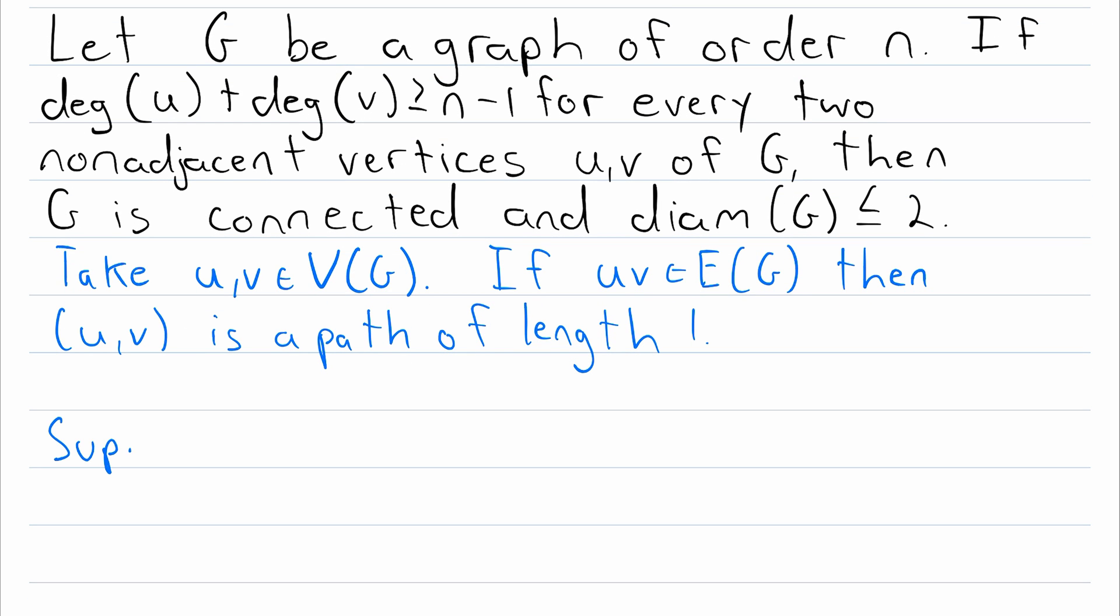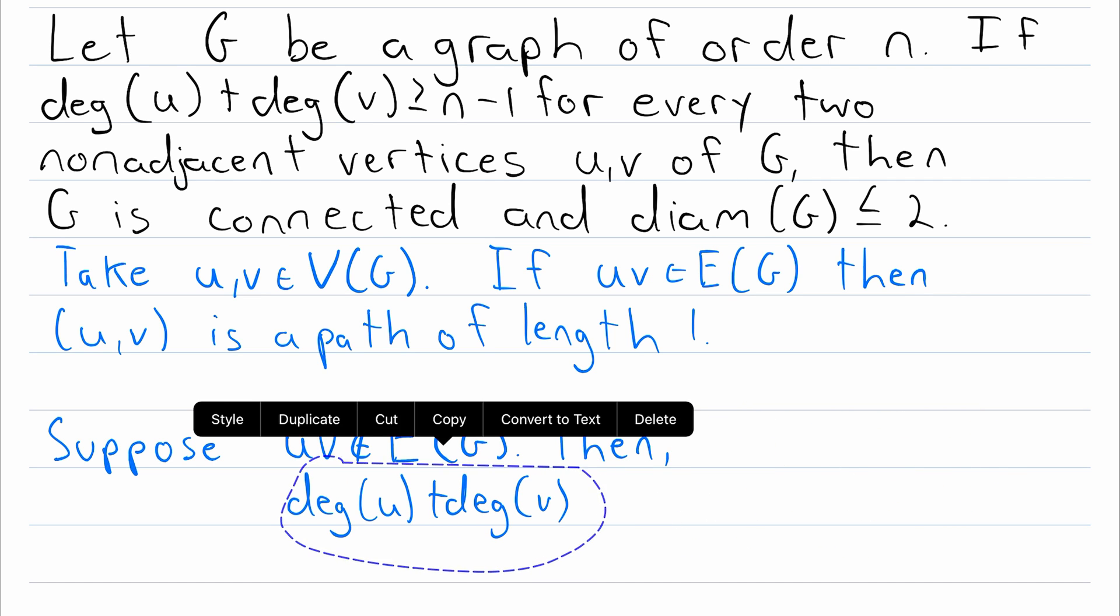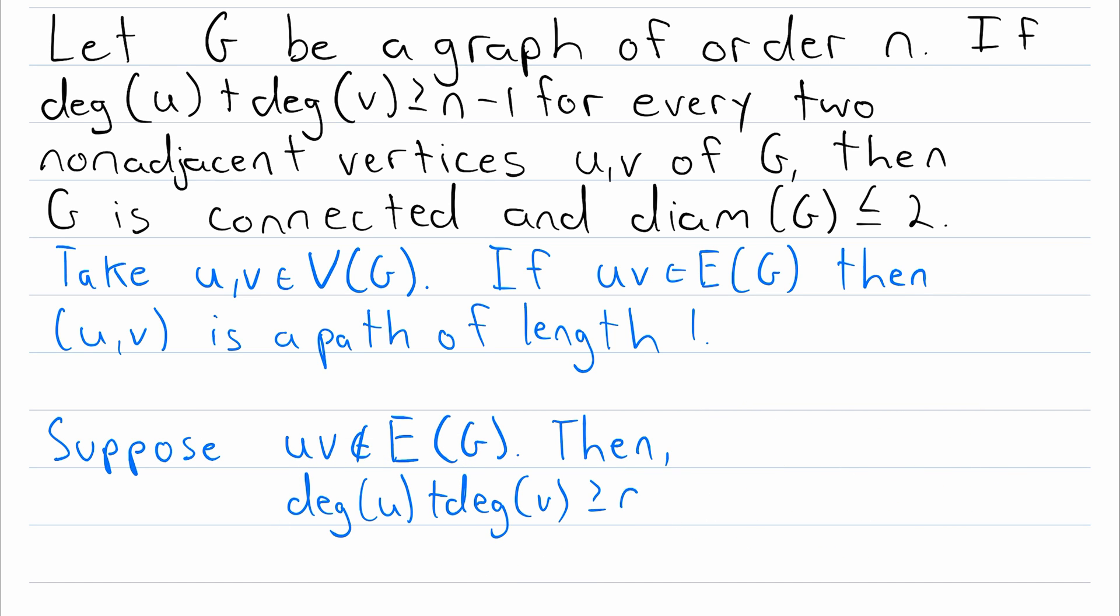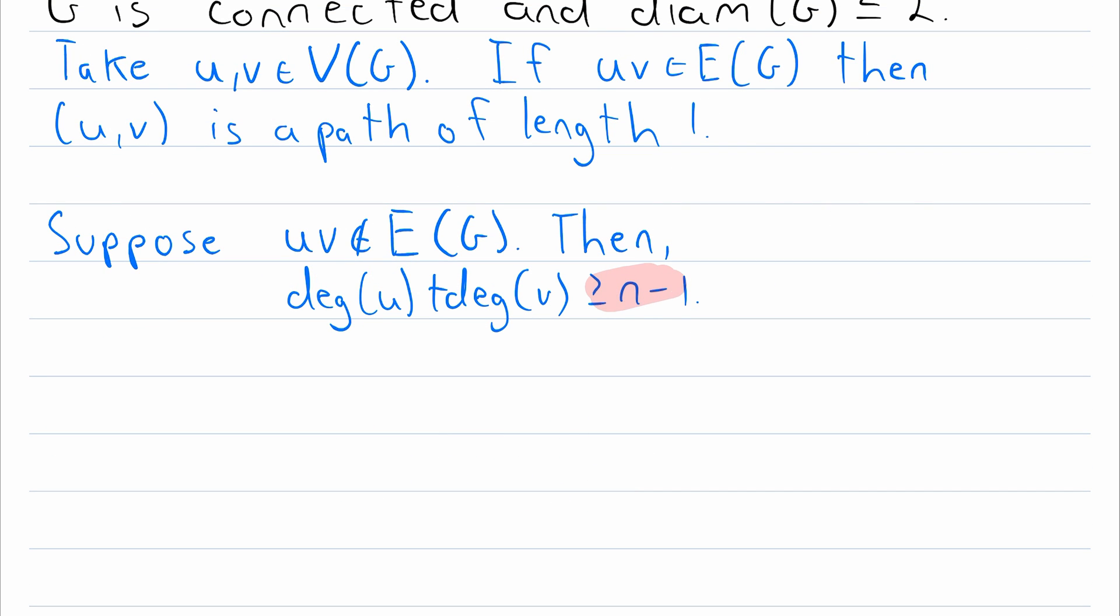Then we can move on to the more interesting possibility that will take just a little more work. Suppose that the two vertices U and V that we selected are not joined by an edge, so they are non-adjacent vertices. Then we can use our hypothesis about the sum of their degrees. Since U and V are not adjacent, the degree of U plus the degree of V is greater than or equal to n minus 1. This means that there are at least n minus 1 edges joining U or V to some other vertex.